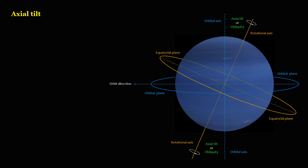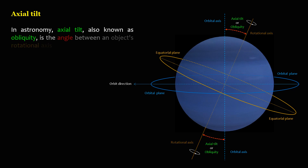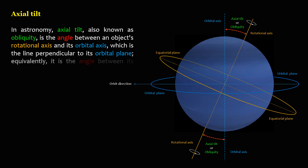Axial Tilt. In astronomy, axial tilt, also known as obliquity, is the angle between an object's rotational axis and its orbital axis, which is the line perpendicular to its orbital plane. Equivalently, it is the angle between its equatorial plane and orbital plane.